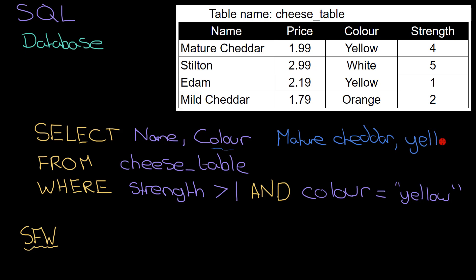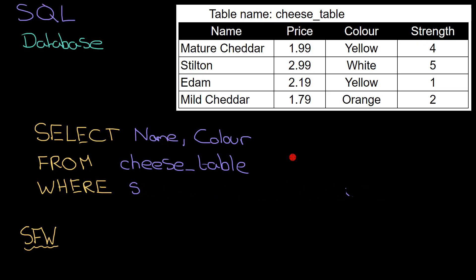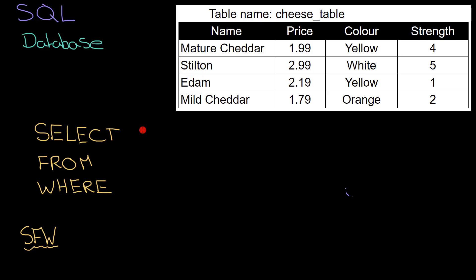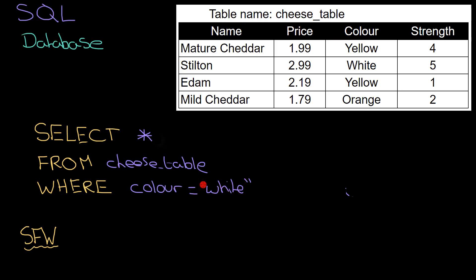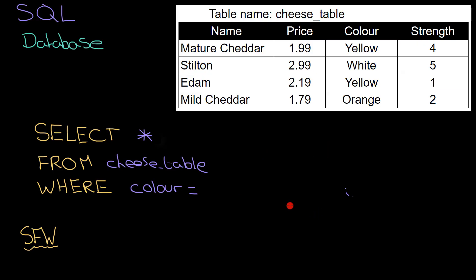On to wildcards — there are a few shortcuts you can take when querying data to make your life easier. If I wanted all the information for one row I can use the asterisk: SELECT * FROM cheese_table WHERE color equals white. If I do that I'd expect to get the whole line of information about Stilton: Stilton, 2.99, white, and 5 — because 5 is the strength.